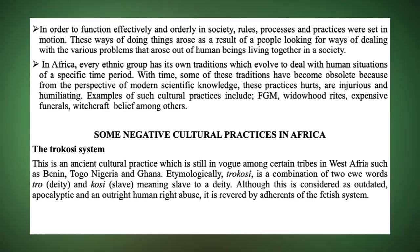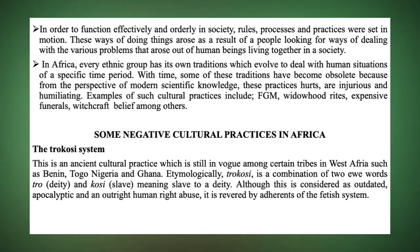The first to be discussed is the Trokosi system. In Africa, the practice of Trokosi can be found in countries like Benin, Togo, Nigeria, and Ghana. In Ghana, the word Trokosi is an Ewe word — a combination of two Ewe words: 'Tro', which means deity, and 'Kosi', which means slave. So literally, Trokosi means 'slave of a deity' or 'slave to a deity.'